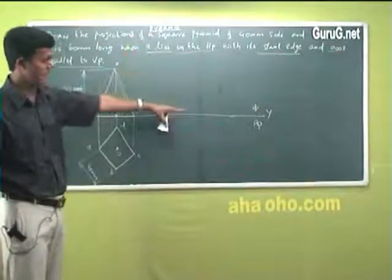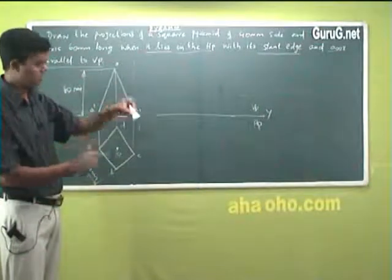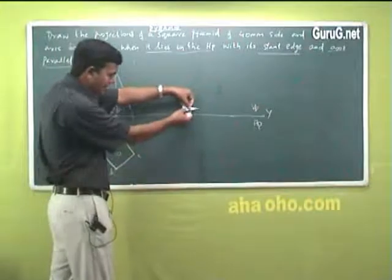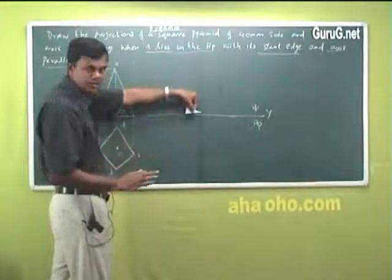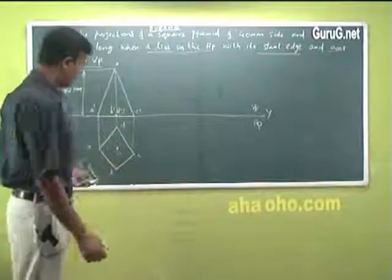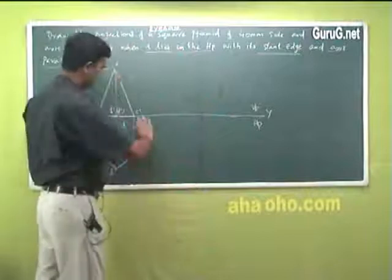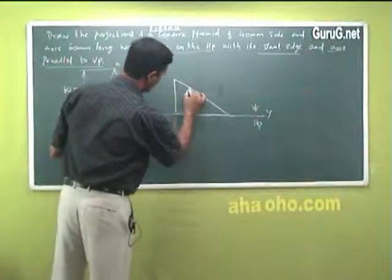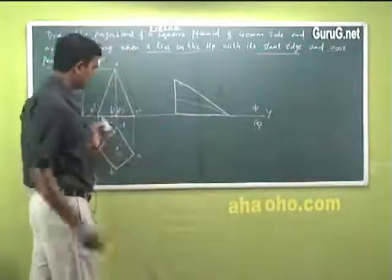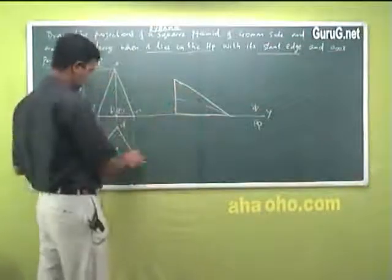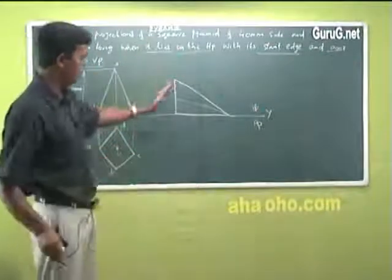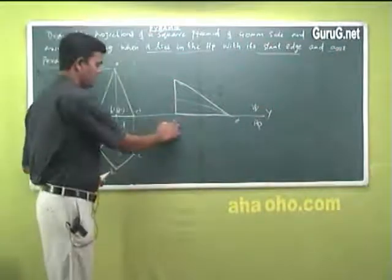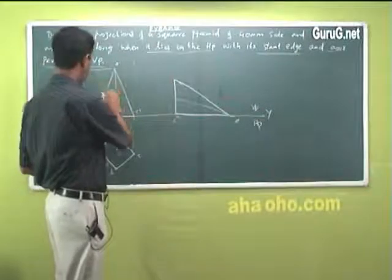The condition should be properly satisfied. The slant edge — edge means only one edge, not the face — should lie on HP. I am resting it like this: not making a slant face rest on HP, only a slant edge. This one edge is just tilted. So here, point O is here and C is here — C-dash — and this point is B-dash, D-dash.